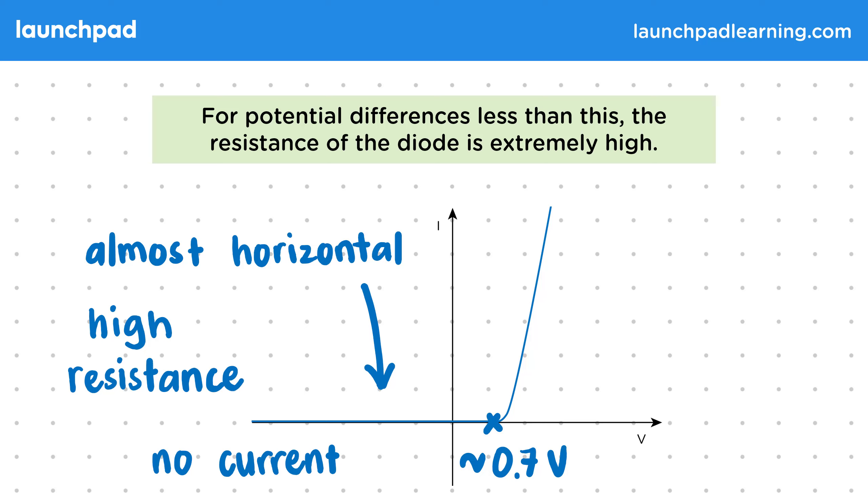This change in resistance is what makes the diode work. Above the threshold potential difference, the resistance is low to allow a current to flow. But below it, the resistance greatly increases to stop the current.